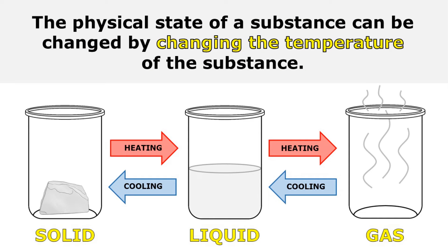The physical state of a substance can be changed by changing the temperature of the substance. I can change a substance from being a solid to a liquid to a gas by heating it up, and I can change it from a gas to a liquid to a solid by cooling it down.